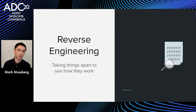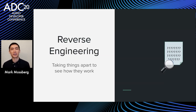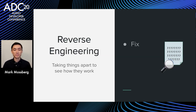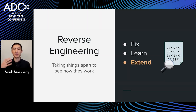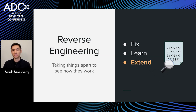My casual definition of reverse engineering is taking things apart to see how they work on the inside. I think this is useful for three main applications: you can fix something if it's broken or buggy; you can learn new things about it, like hidden or undocumented features; and you can extend it if it has limitations or doesn't do exactly what you want. That last application is the most interesting and what we'll focus on in this talk.